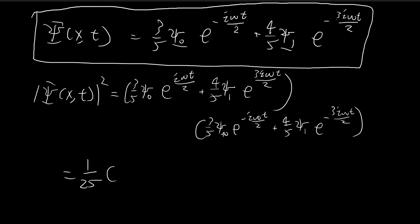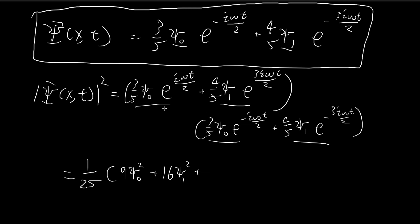When we multiply these terms together, the first pair gives 9 xi 0 squared, and the exponential terms cancel out to give e to the power of 0, which is just 1. The same thing happens for the second pair — you get 16 xi 1 squared with the exponentials canceling. For the cross terms, 4 times 3 gives 12, and you get xi 0 times xi 1.